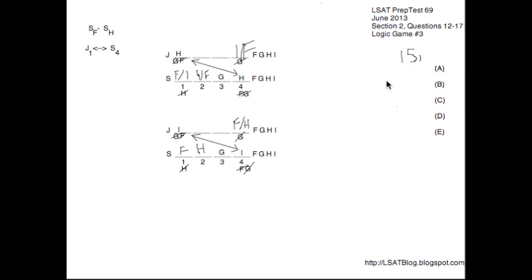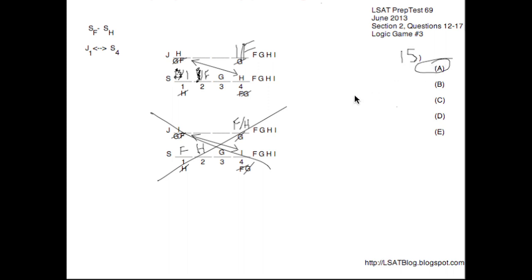Question 15: if I is the first school on the snack level, the bottom diagram is irrelevant since it has F on S1. Using the top diagram, I goes on S1, forcing F onto S2, giving us I, F, G, H on the snacks row. They ask what could be true. F on J2 — yes, we could have F on J2, I on J4, G on J3, which works perfectly. H on J2 or J3 — no, H is on J1. I on J1 — no, H is there. H on S2 — no, F is there. So A is our answer for 15.